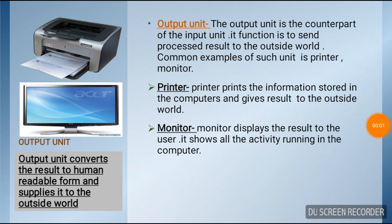Let's talk about the second category: Output Unit. The output unit is the counterpart of the input unit. Its function is to send processed results to the outside world. Common examples include printer and monitor. A printer prints the information stored in the computer and gives results to the outside world. A monitor displays the result to the user.